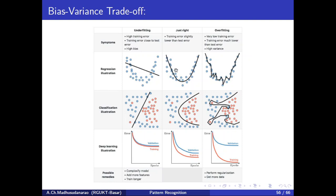In the just-right fit case, training error and test error are almost nearby each other, and the error you are going to get is not so high — it is somewhat reasonable and bit low. You can see both training error and test error are somewhat low.